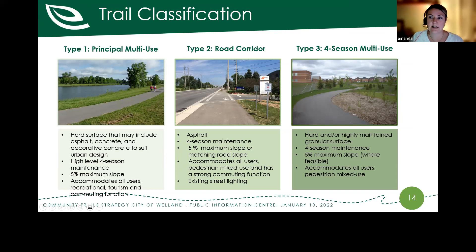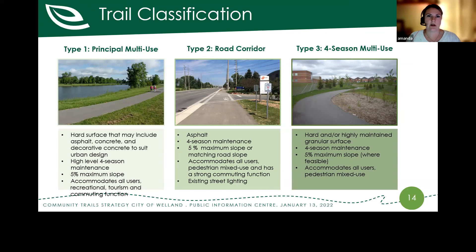Type three is the Four-Season Multi-Use Trail — special gems in the community. These are mostly hard surface, better maintained to ensure higher quality. Still flat slopes, and really geared to make sure these are trails for everyone — very accessible and able to accommodate a lot of users.